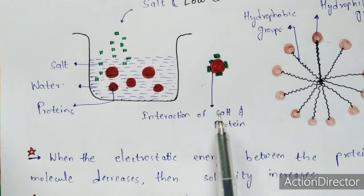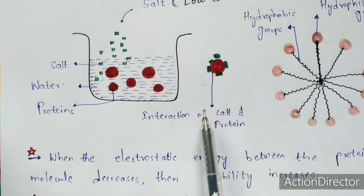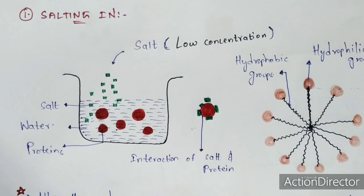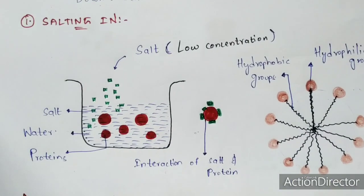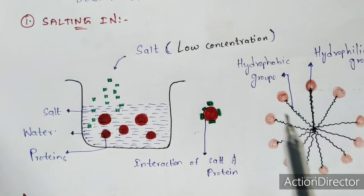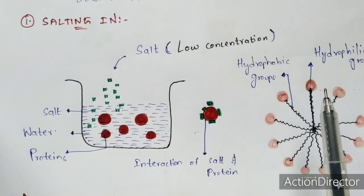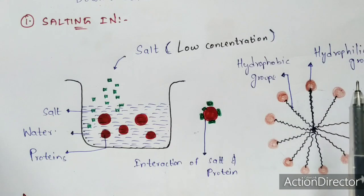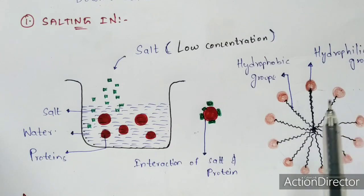The type of interaction that occurs in the salting in process is hydrophilic interaction. Hydrophilic and hydrophobic — there are two groups: the hydrophilic head and the hydrophobic end. The hydrophilic head is present in the outer region, and the hydrophobic end is present towards the inner side.